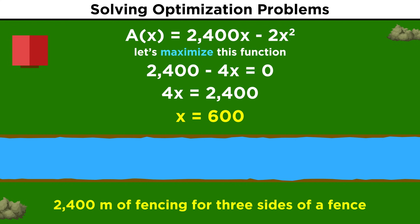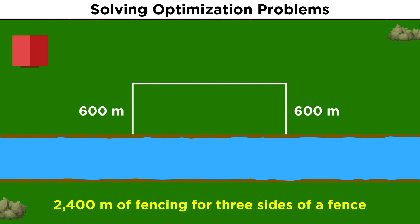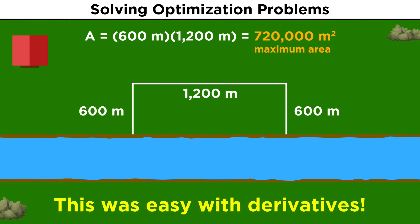Area will be at a maximum when x equals six hundred meters, so these two sides are six hundred, making this side twelve hundred, and the maximum possible area of the rectangle will be seven hundred twenty thousand. So as you can see, taking a quick derivative and setting it equal to zero is much easier than doing guess and check all day.